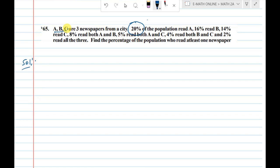Any types of newspapers are A, B, C. Three types of newspapers. So P of A is 20%. 16% read B, so P of B equal to 16%. Next, 14% read C. P of C is 14%.